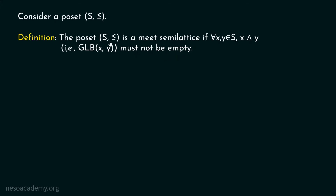We are considering this poset S, less than or equal to, and we are saying that the poset is a Meet Semilattice if for all x, y belonging to S, every x and y's greatest lower bound cannot be empty. If it is the case that GLB of x, y is equal to phi, then the poset is not a Meet Semilattice. As simple as that.